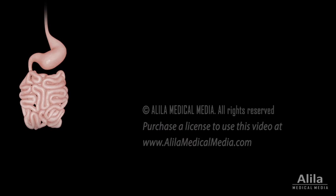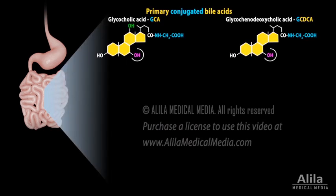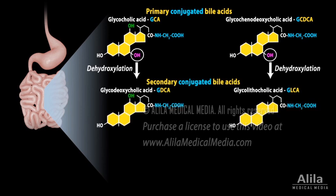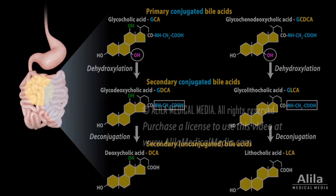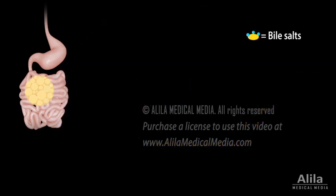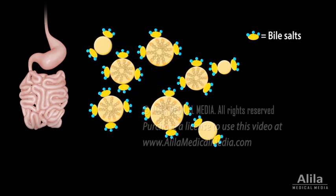In the intestine, microorganisms of the gut microbiota chemically modify the primary bile acids, converting them into secondary bile acids. The bacteria also deconjugate some of the bile acids. While passing through the intestine, bile acids help with digestion of fats. They act as a detergent, breaking large globules of fat into smaller micelles, making them more accessible to lipase. Bile acids are also critical for transport and absorption of the fat-soluble vitamins.